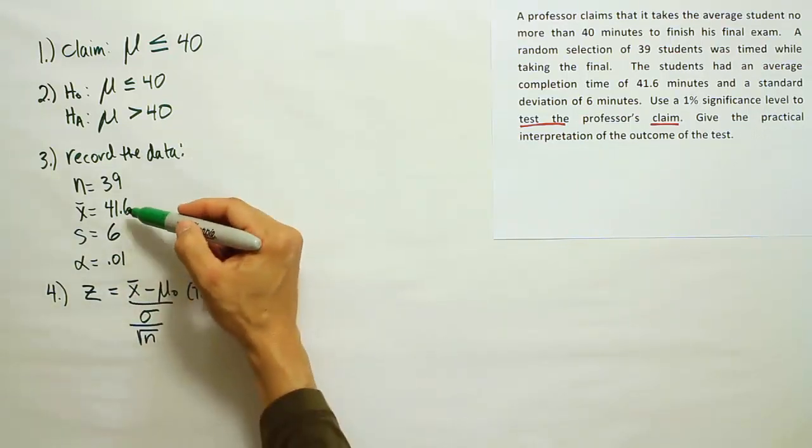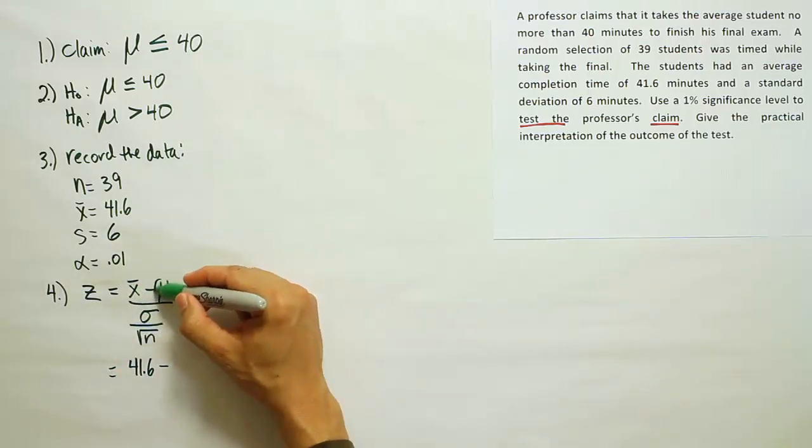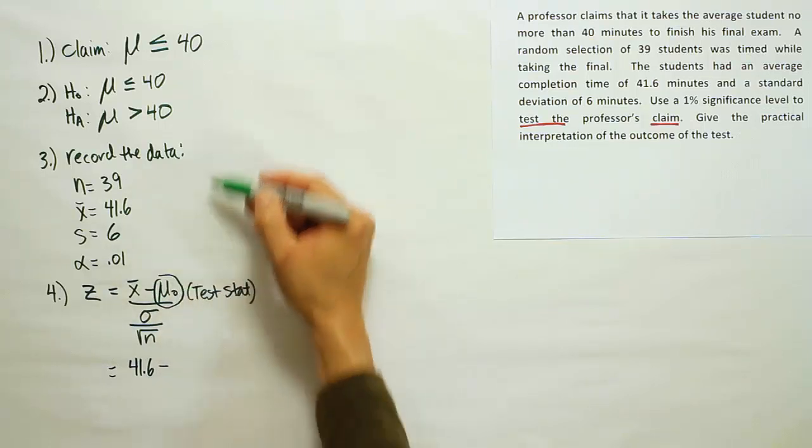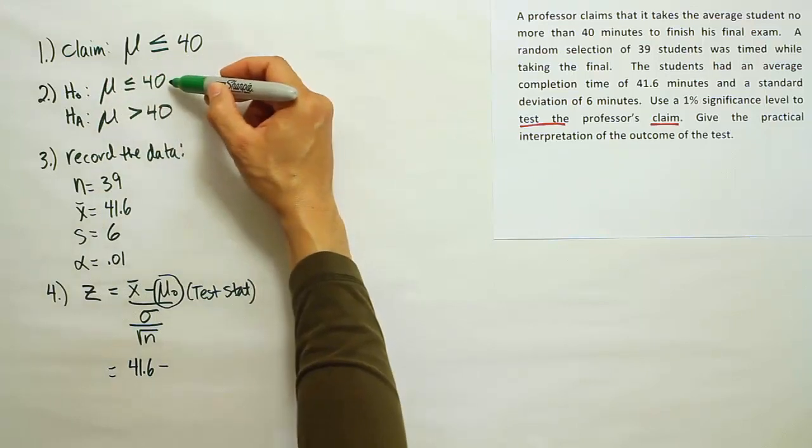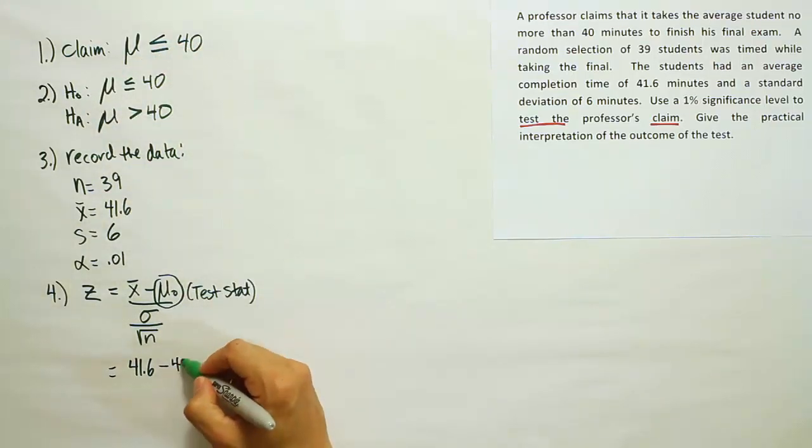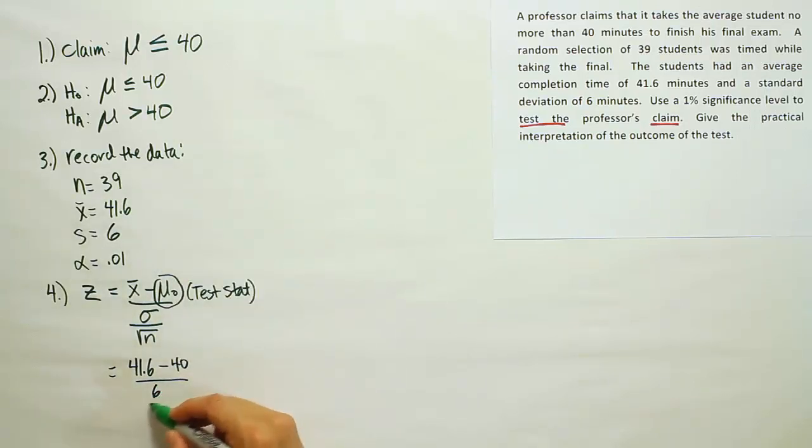Now, enter the things you have. X bar is going to, of course, be 41.6 minus this number, which comes from H0 based on that little subscript of 0. That's telling us to get the number from the hypothesis with that same subscript of 0. And we end up with 40 there. Sigma can be replaced by S as a substitution. And then the square root of N is the square root of 39. Okay. So, let's work this out in our calculator.